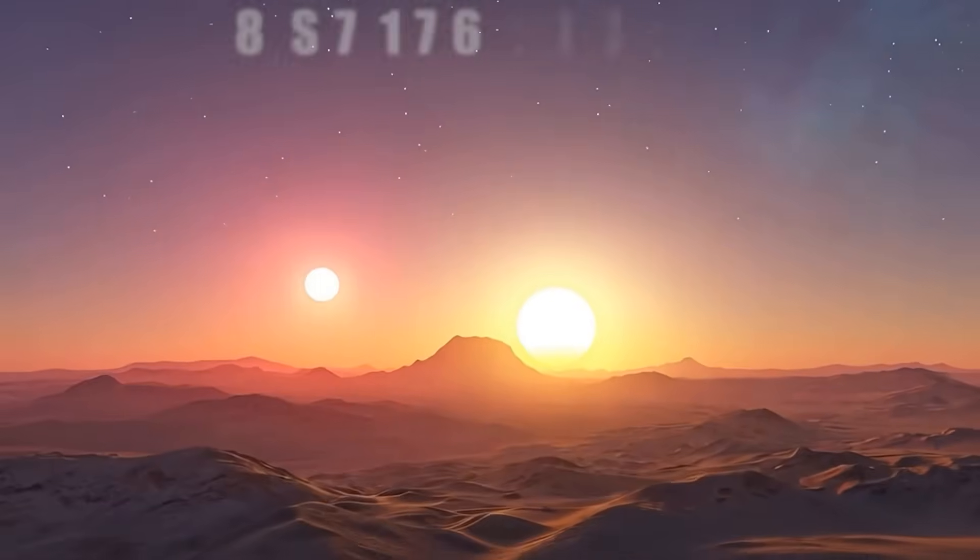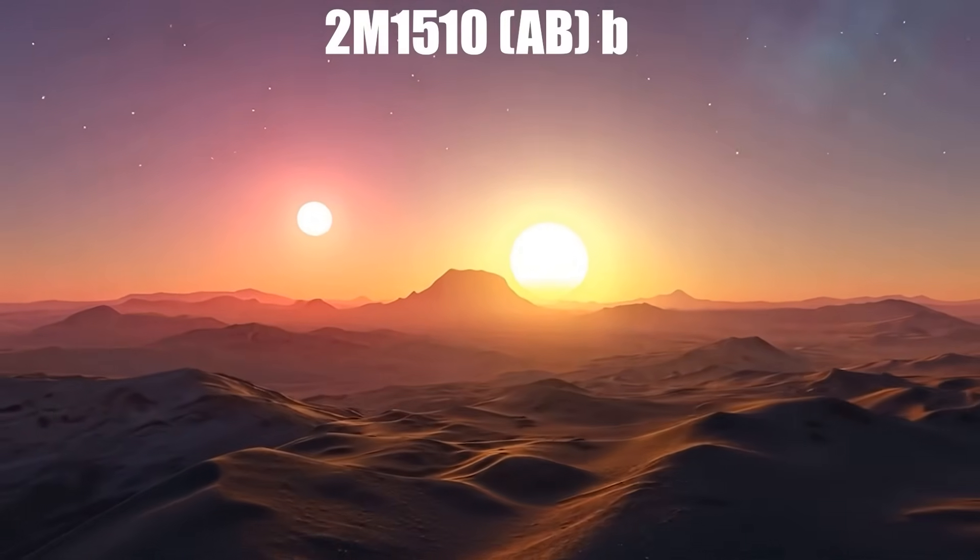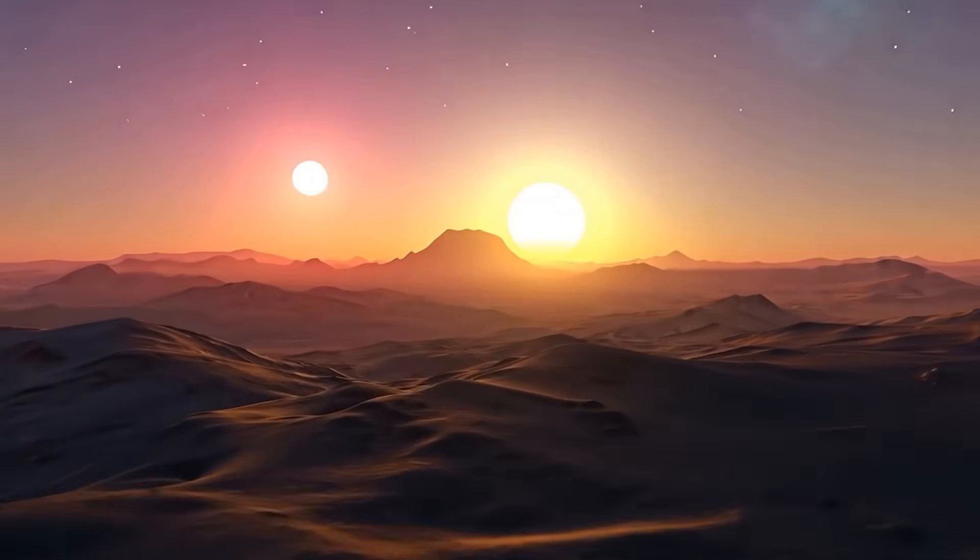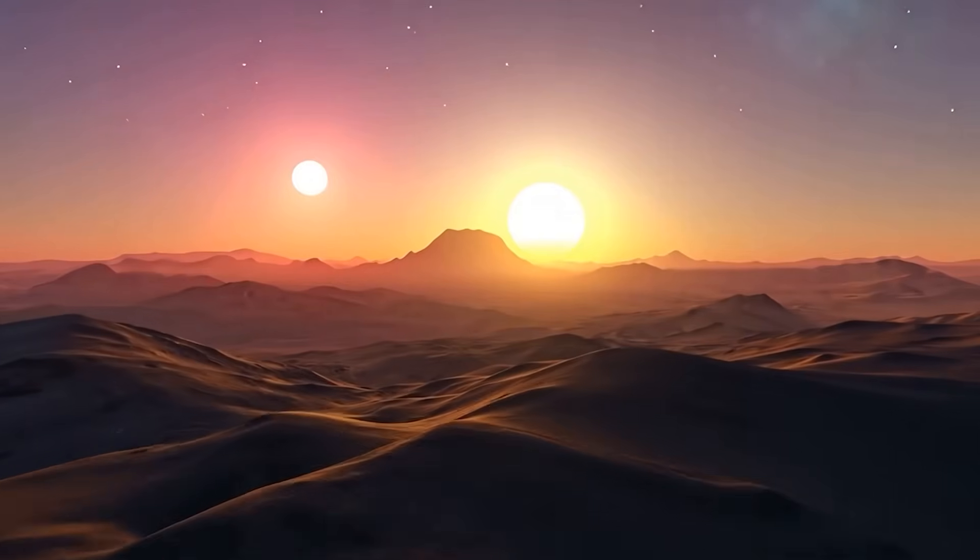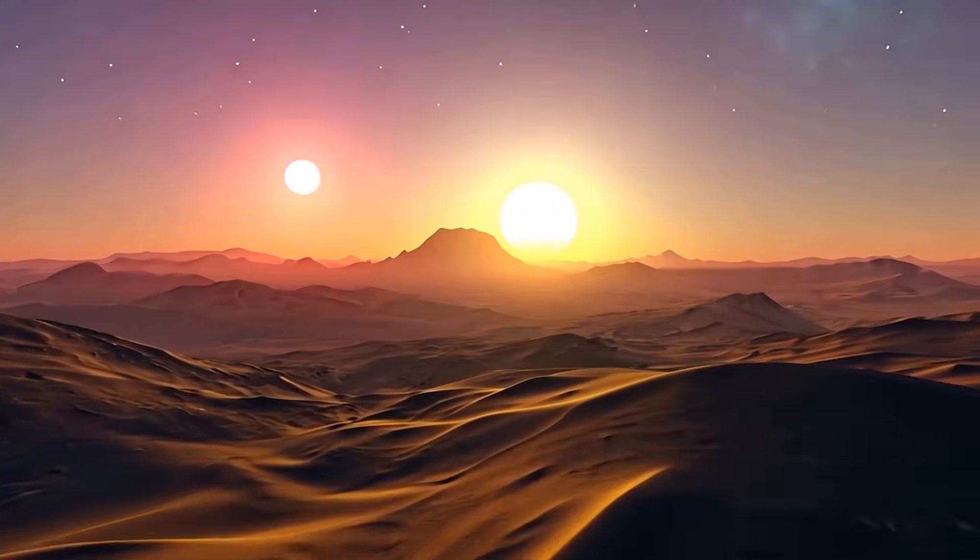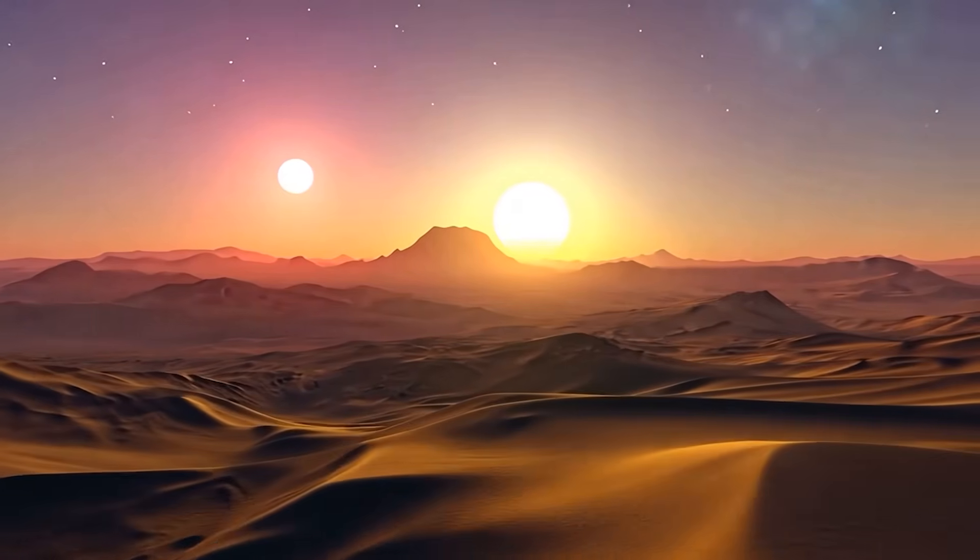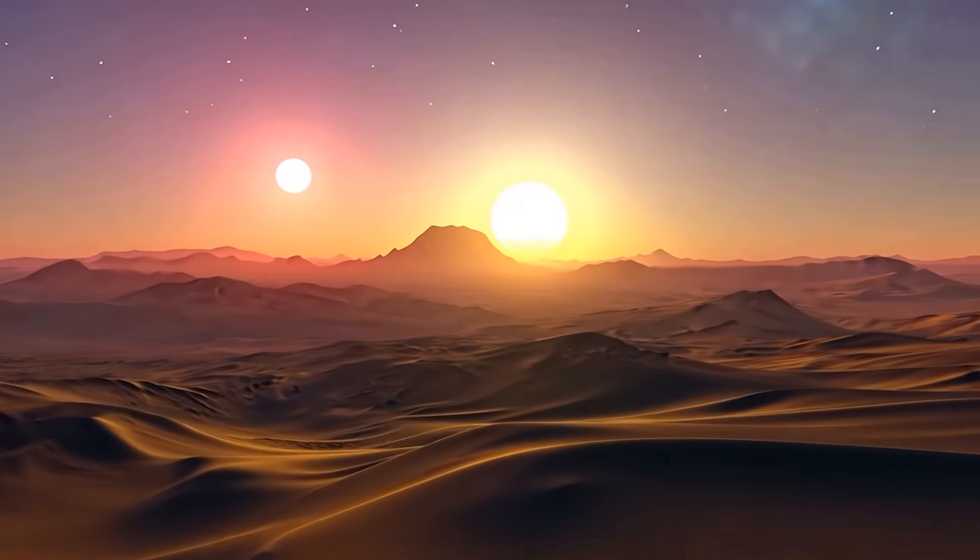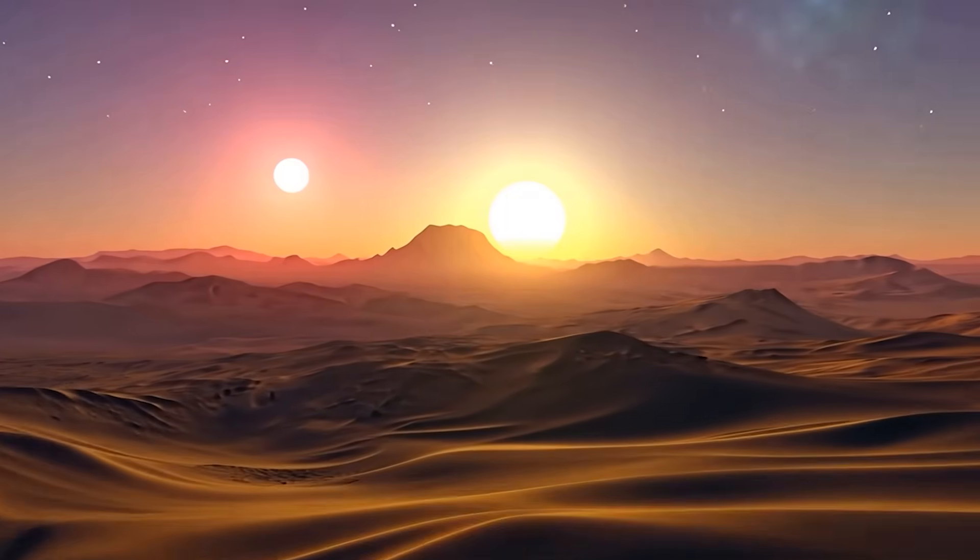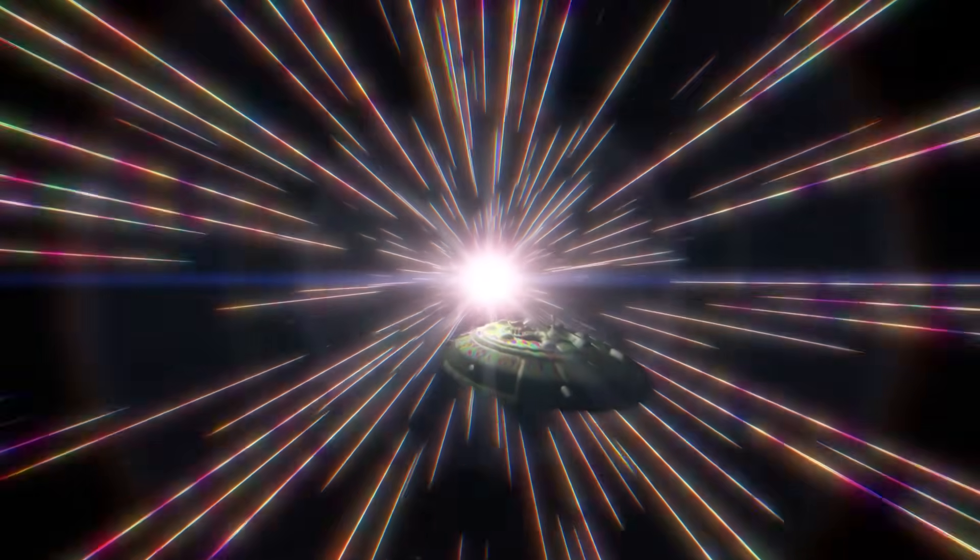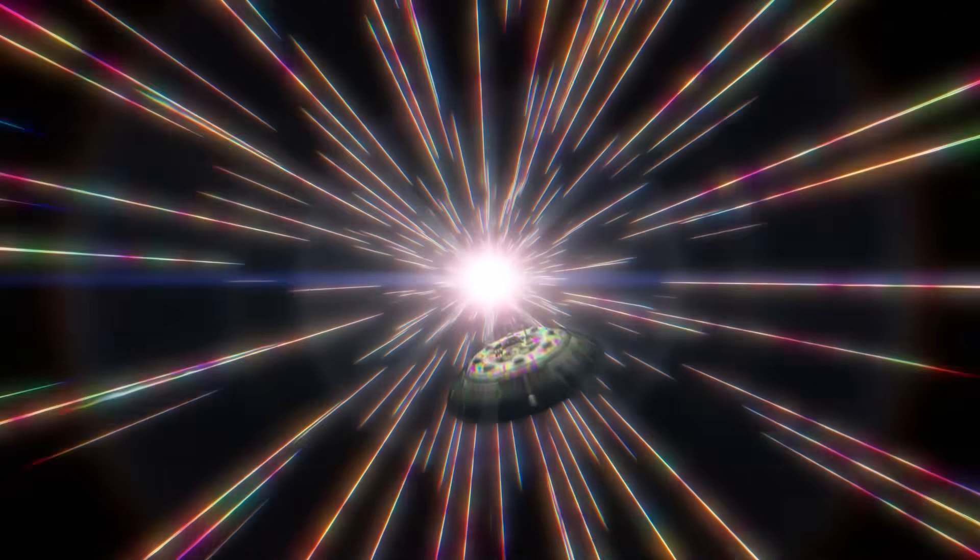The skies from 2M1510ABb would put Tatooine's twin sunset to shame. Depending on your position and the planet's orbit phase, you might see both brown dwarfs appearing to chase each other across the sky, or watch as one rises while the other sets in completely different directions. Celestial mechanics would create light shows more spectacular than anything the Millennium Falcon could witness during hyperspace travel.